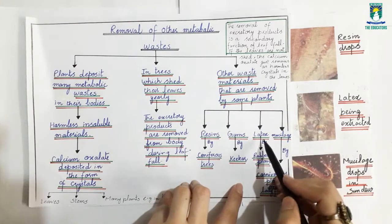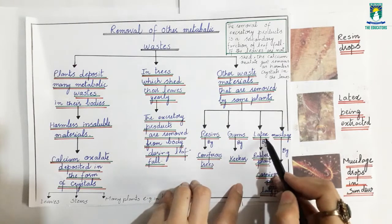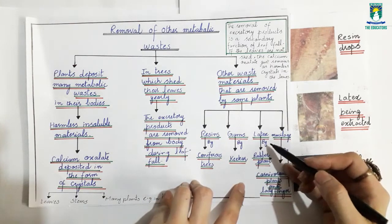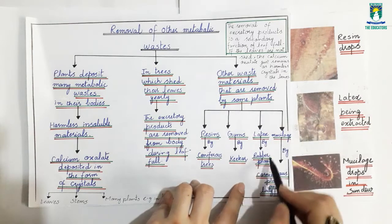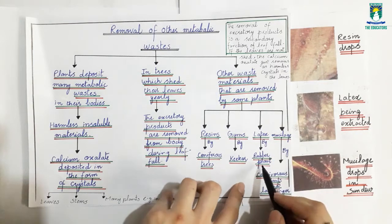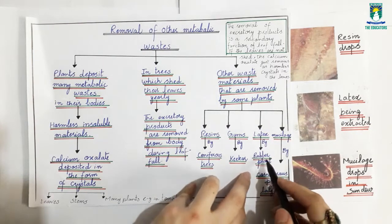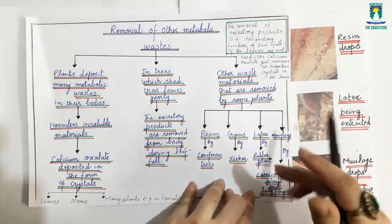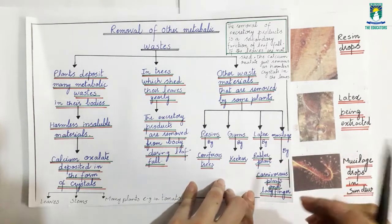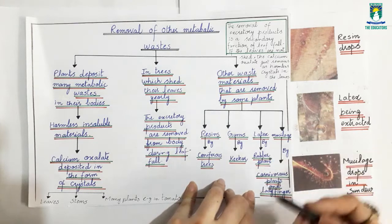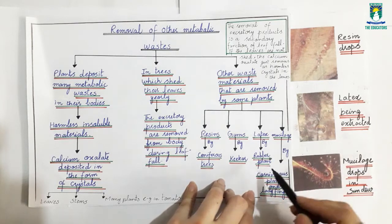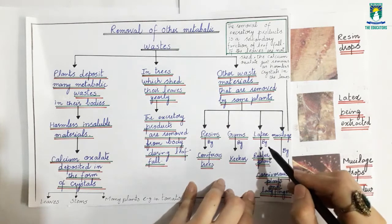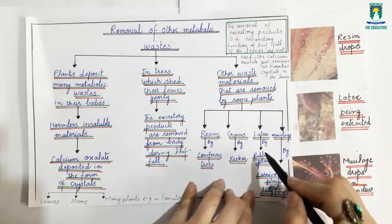The next metabolic waste is latex. Latex is removed from the rubber plant. It is a milky liquid material — a milky fluid — which is used in rubber manufacturing.